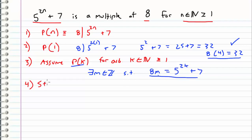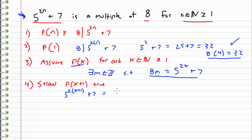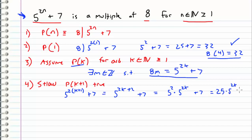Now the next thing we need to do is show that P of k plus 1 is true for an arbitrary integer k. I'm going to plug k plus 1 into this expression. When I do that I get 5 to the 2 times (k plus 1) plus 7. I'll simplify this as 5 to the 2k plus 2 by distributing the 2, and then simplify further by bringing out 5 squared. So I can write this as 5 squared times 5 to the 2k plus 7, which is equal to 25 times 5 to the 2k plus 7.